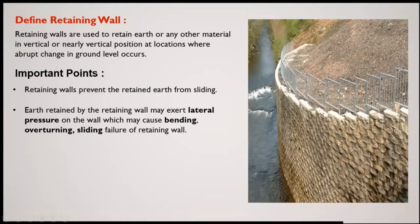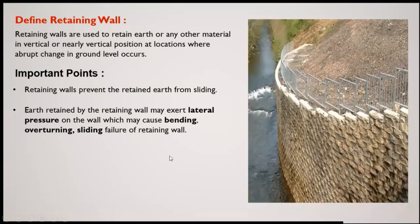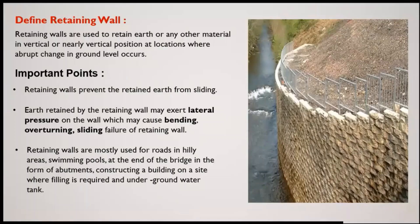Due to the pressure applied by the retained material, if the retaining wall is not of adequate strength, it may bend, it may overturn, or it may slide from its position — moving away from the backfill. This would be the failure of the retaining wall, and its purpose of retaining the earth would not be achievable.